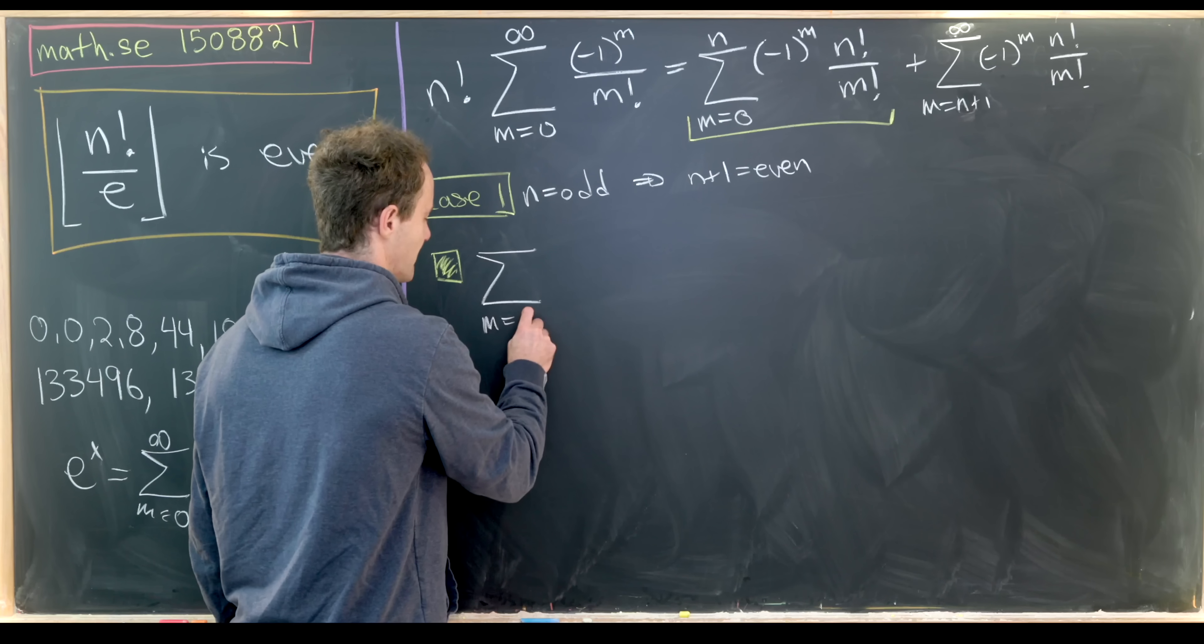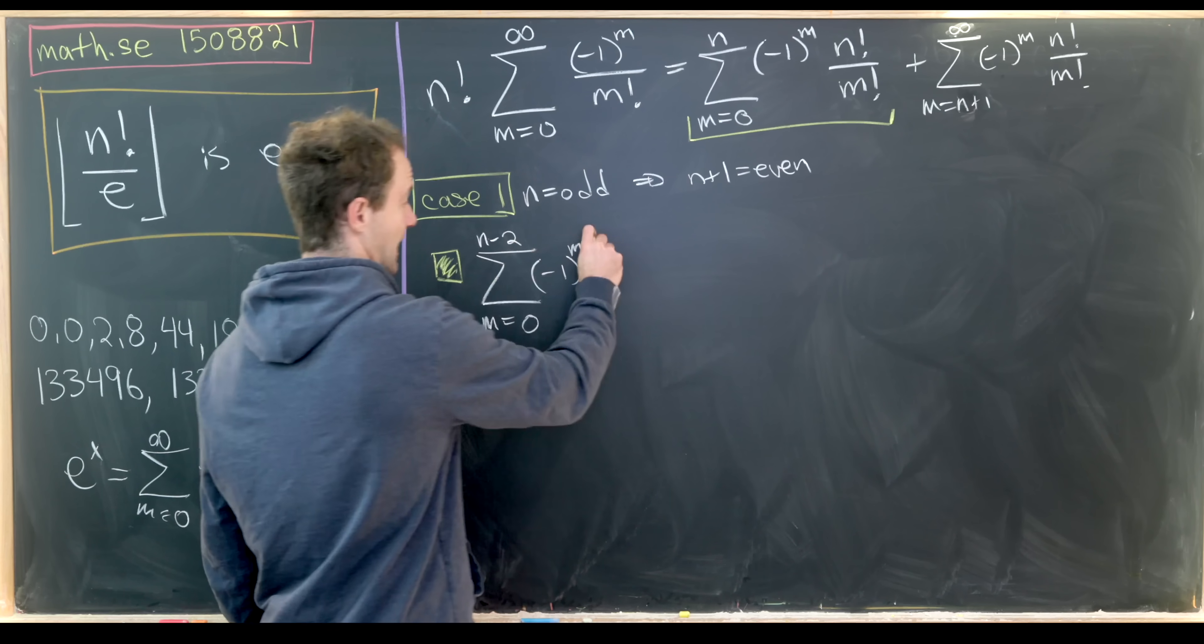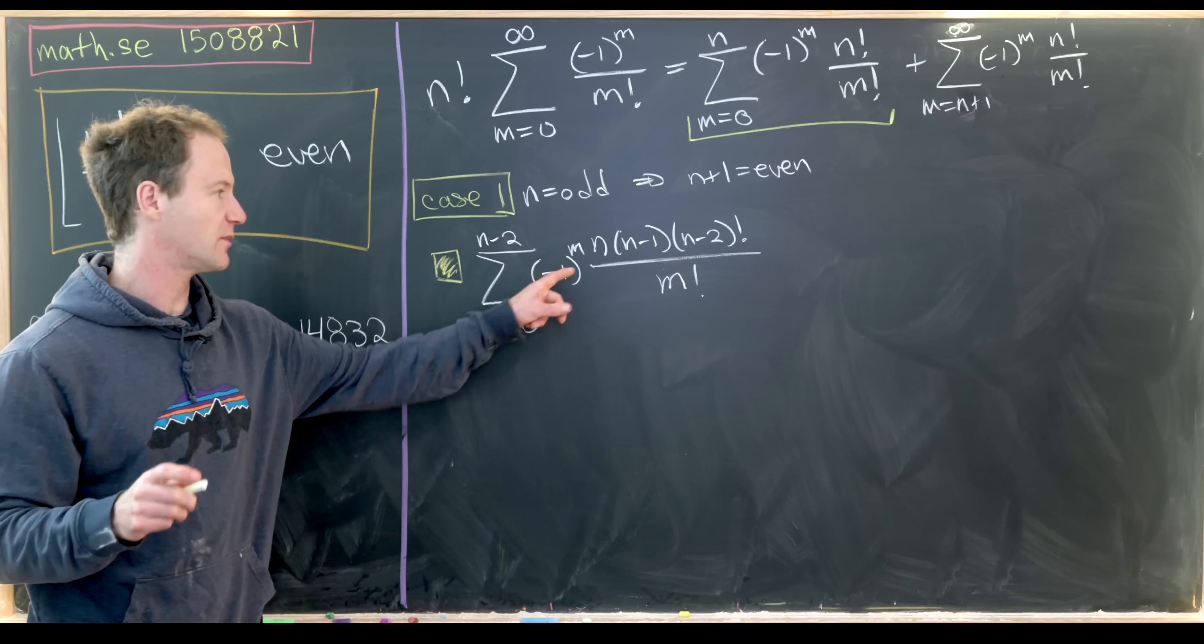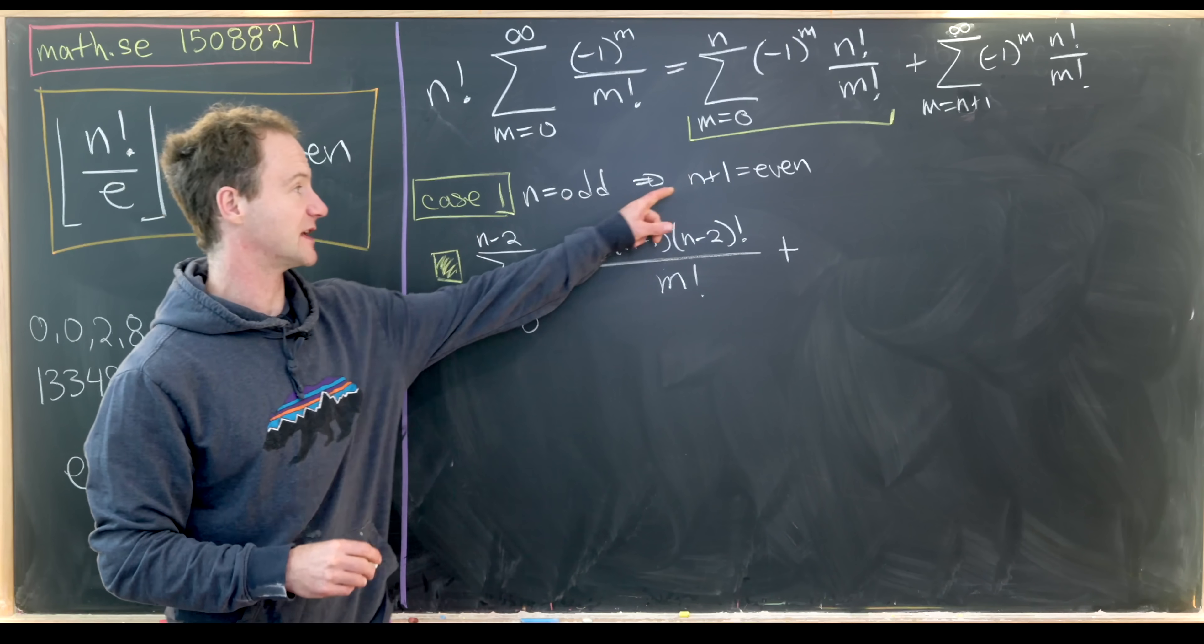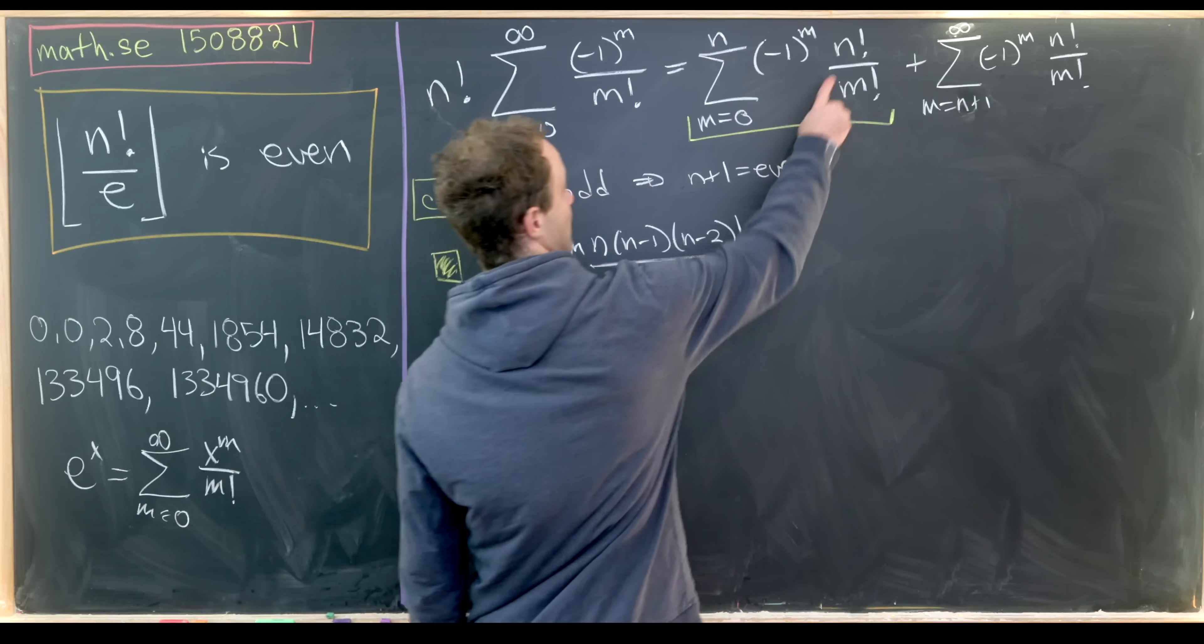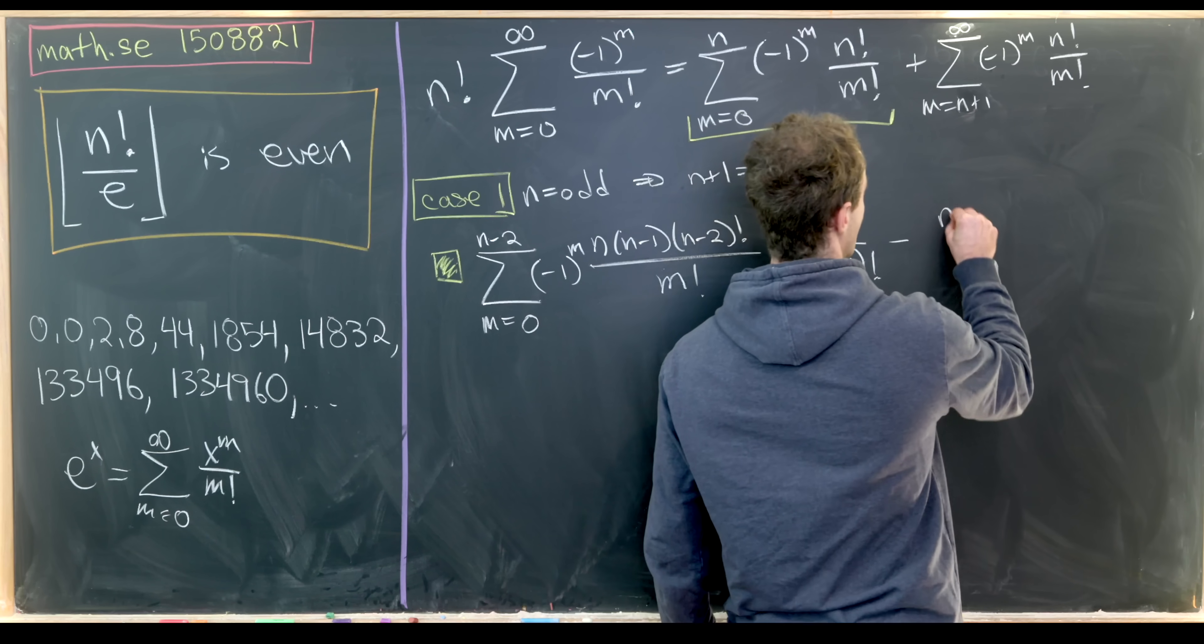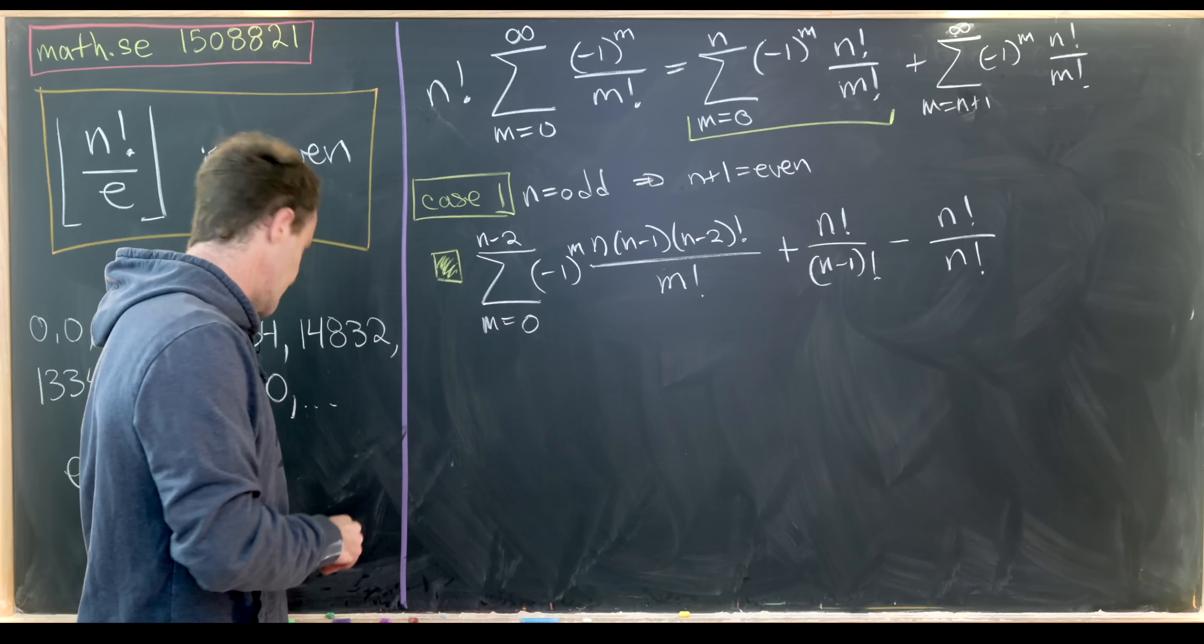So I'll take this and I'll split off the last two terms. So I'll write this as the sum as m goes from 0 to n minus 2, and then we'll have minus 1 to the m, and then we'll have n times n minus 1 times n minus 2 factorial over m factorial, where I just took the first couple of terms out of the n factorial. And then I'll have my next term, which is attached to n minus 1, which will have a plus sign because n minus 1 and n plus 1 have the same parity. And that'll give me n factorial over n minus 1 factorial. Then the nth term will be minus n factorial over n factorial.